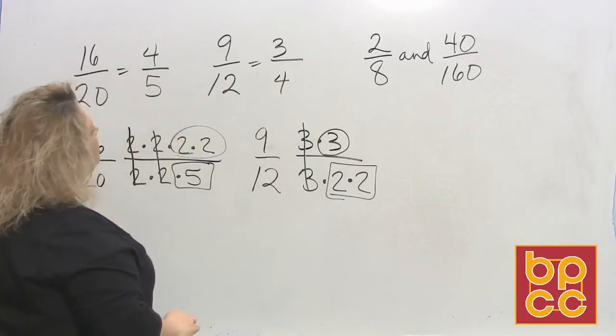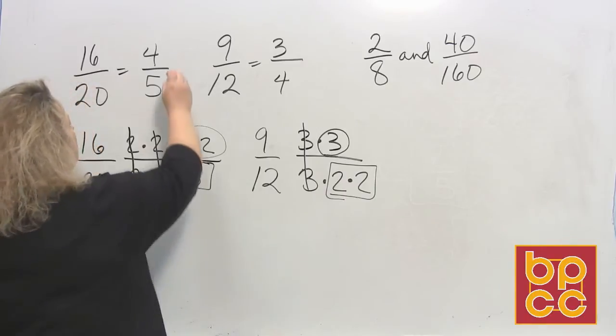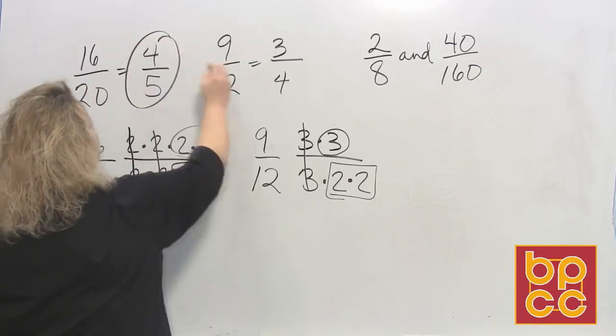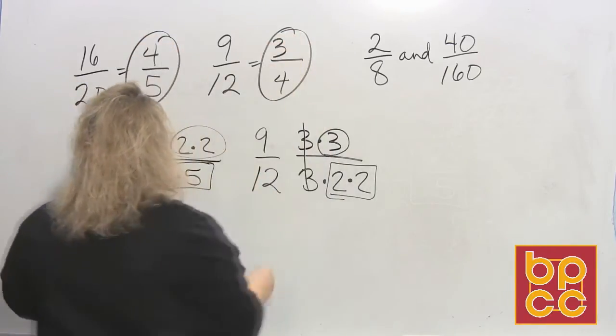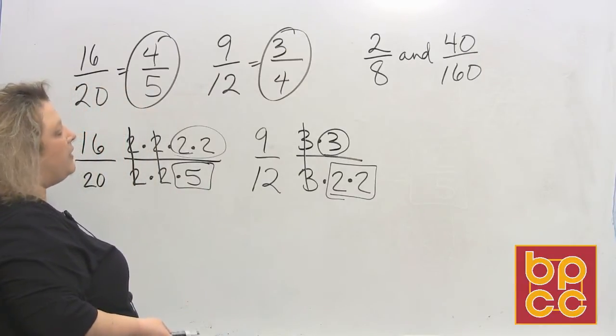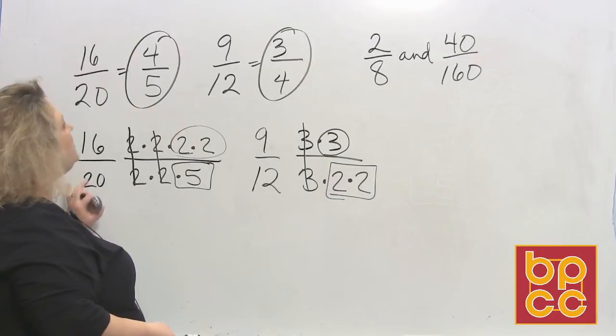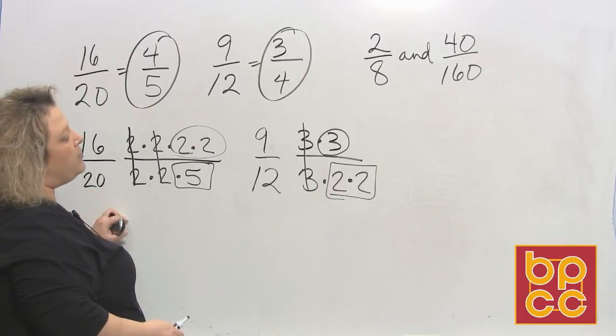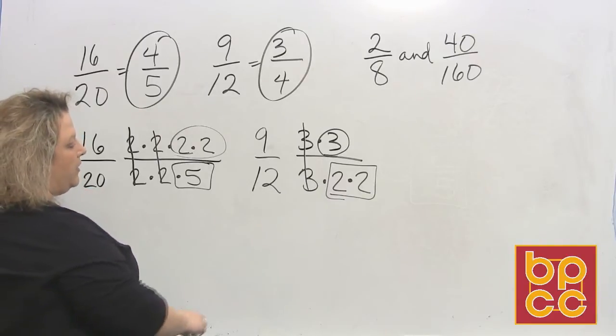So when I look at these two fractions in lowest terms, I have 4 fifths and I have 3 fourths. Do those look like they represent the same amount? No, they do not. So therefore 16 over 20 and 9 over 12 are not equivalent fractions.